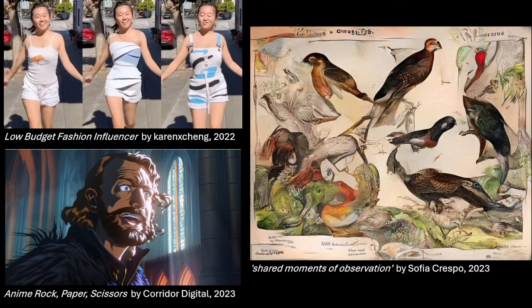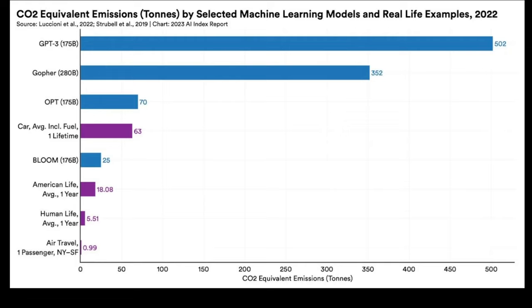One reason the course is called Computational Creativity is that people — influencers, YouTubers, artists — are grabbing code bases and making creative and artistic outputs. I follow people on Instagram who use this stuff; influencer Karen X. Cheng makes little 30-second reels showing her use of Stable Diffusion, Midjourney outpainting, and more. The group Corridor Digital made an anime-rendered version of a scene shot in their studio from green screen. And on the fine art side, artist Sophia Crespo uses GANs to make dreamy naturalistic images of birds, jellyfish, and parrots. We'll talk about how artists are using this material.